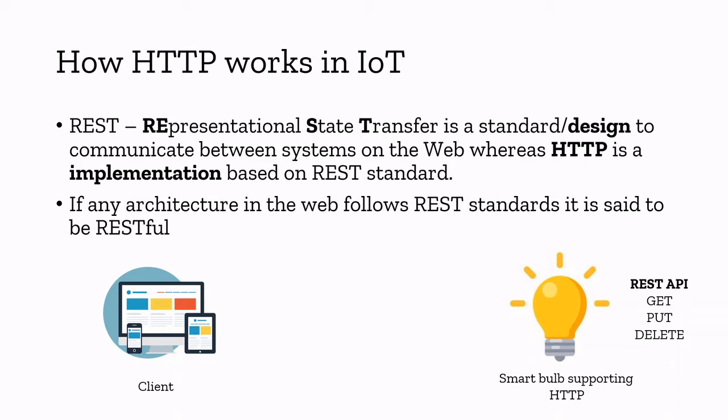The device provides a REST API which supports GET, PUT, and DELETE — these are HTTP verbs. When you are searching for a website from your browser, by default you are making a GET request. But when it comes to REST API, there are other HTTP verbs available. For example, PUT — you will use this in order to change the state of a bulb. And if you want to delete this device from the server, you can use a DELETE request.